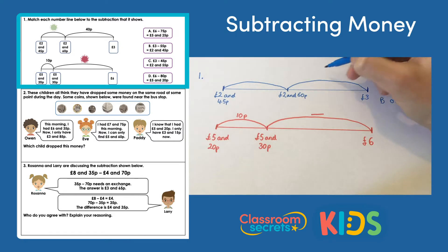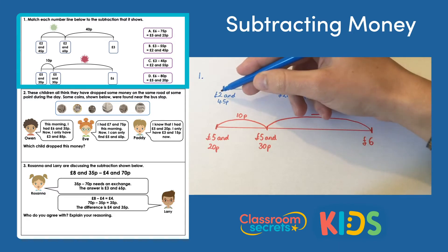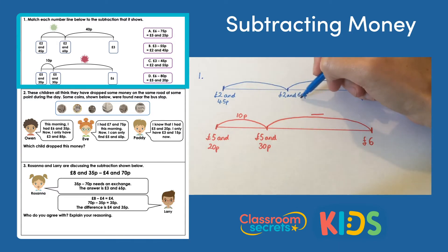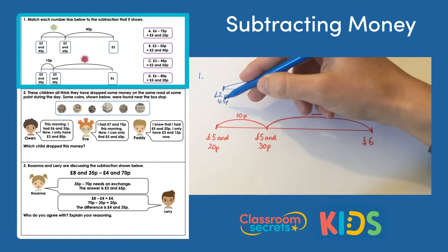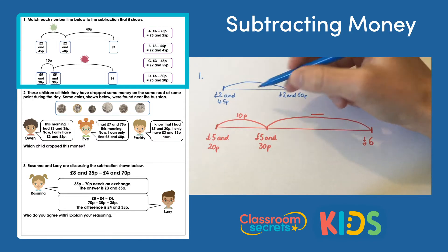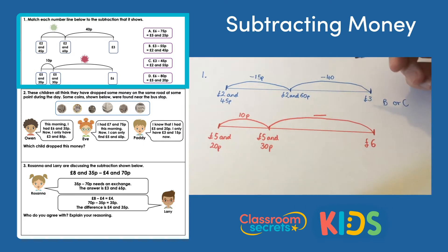Now we first have taken away 40p at the top, which gets us to two pounds 60. Then we need to get to two pounds 45. So two pounds take away two pounds is nothing. Then 60p take away 45, the difference between 45 and 60 is 15 pence. So we've taken away 15 there.